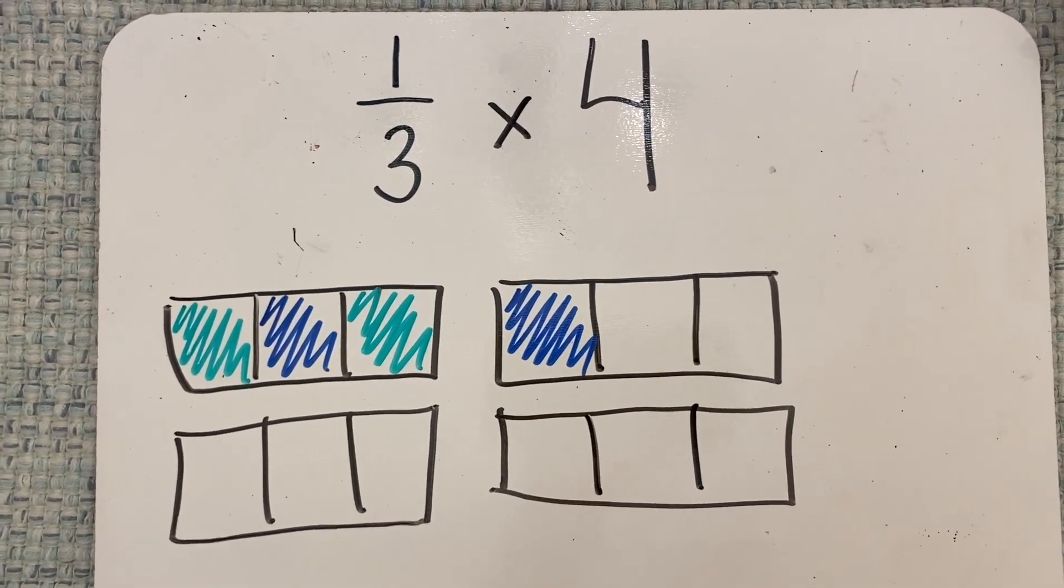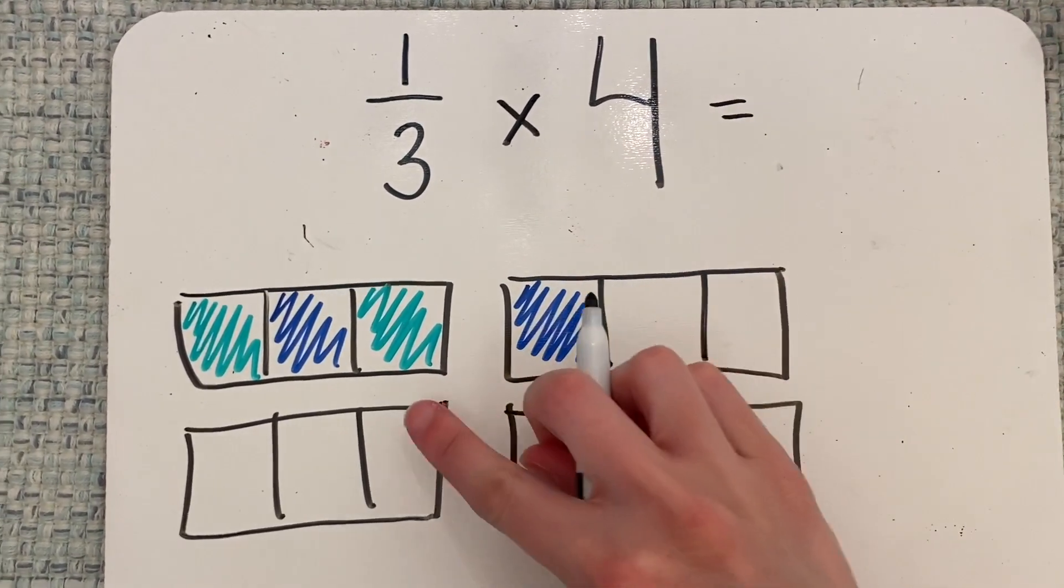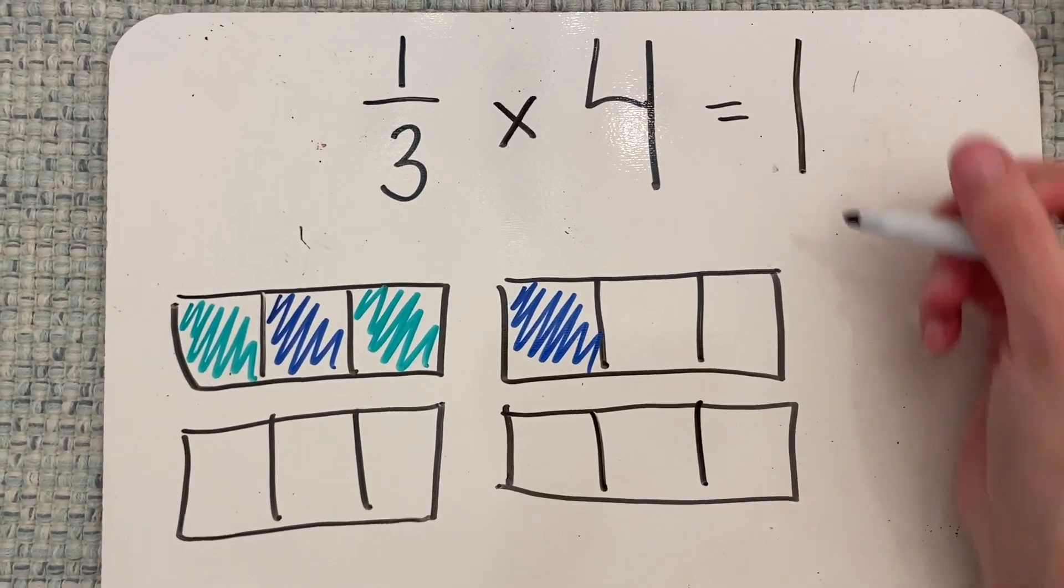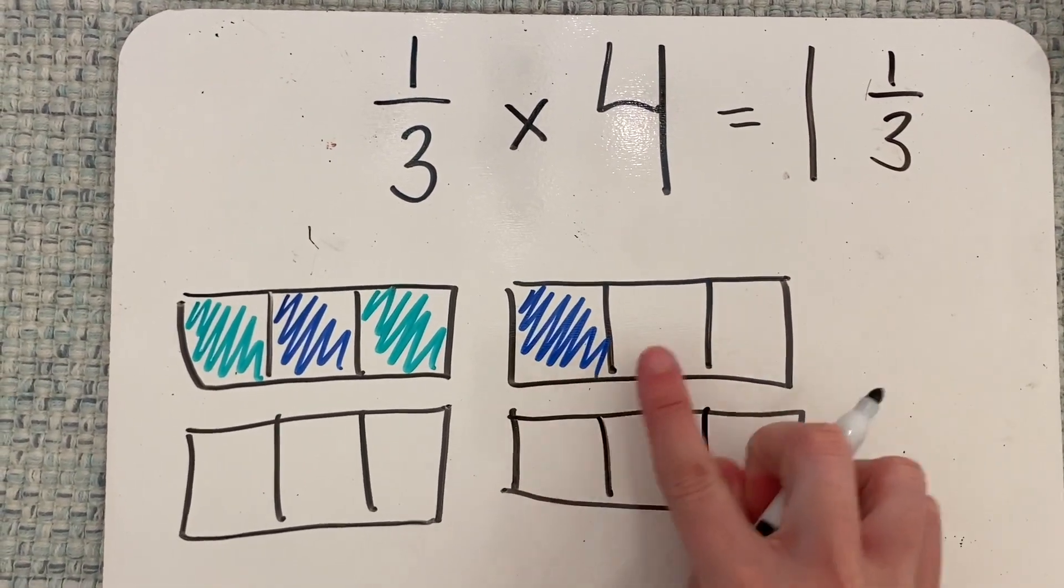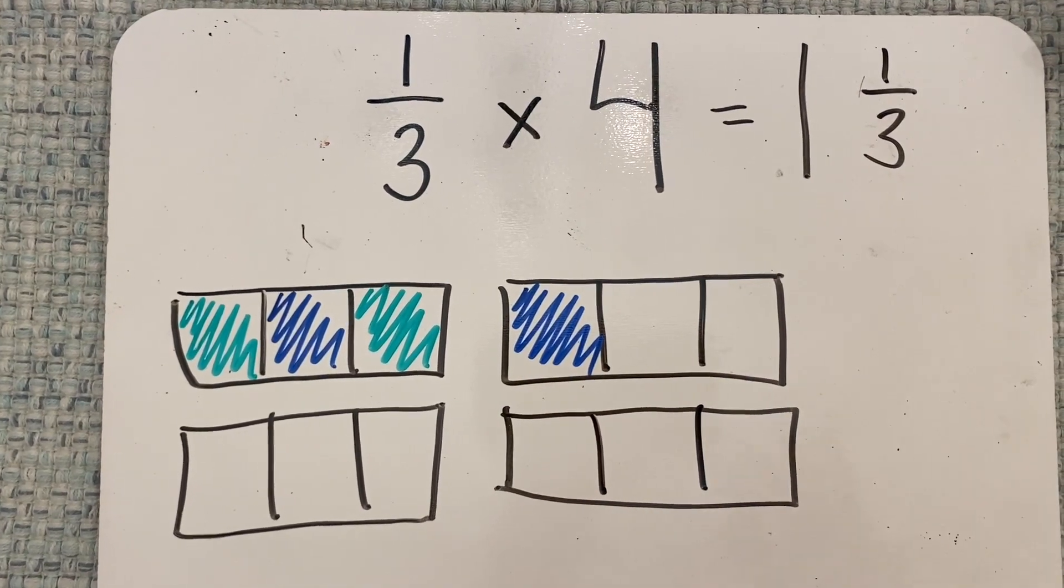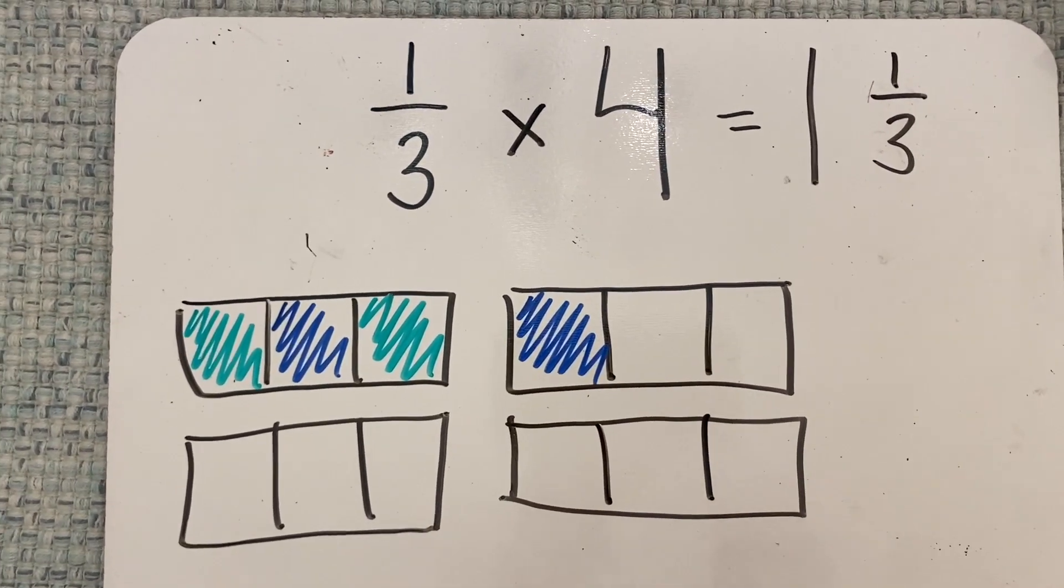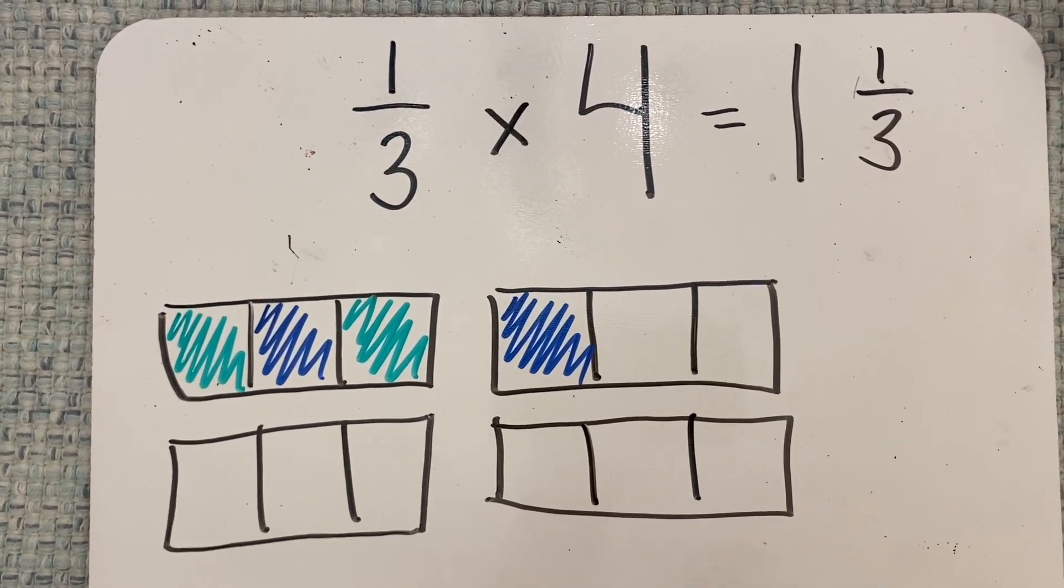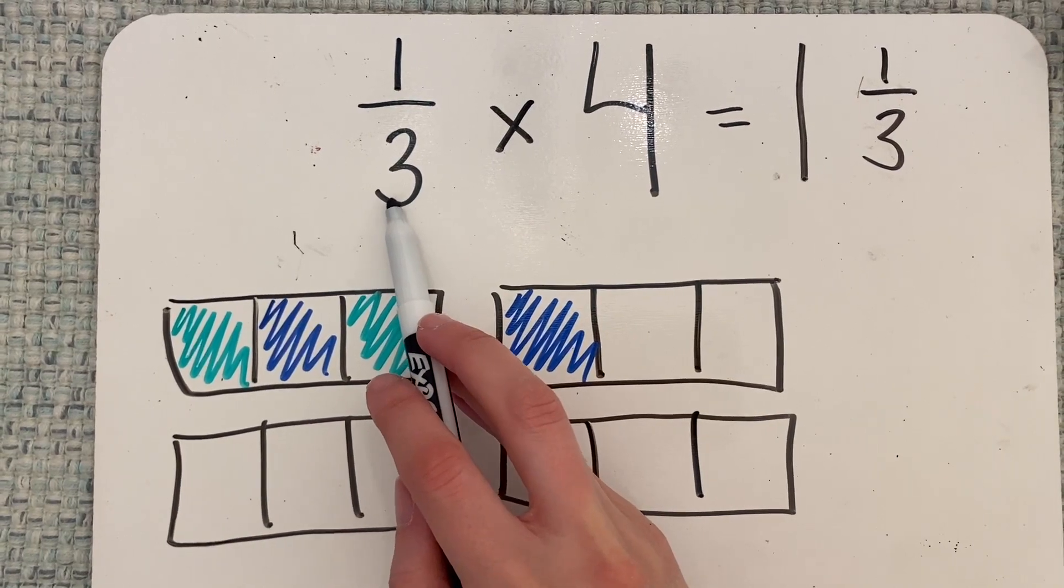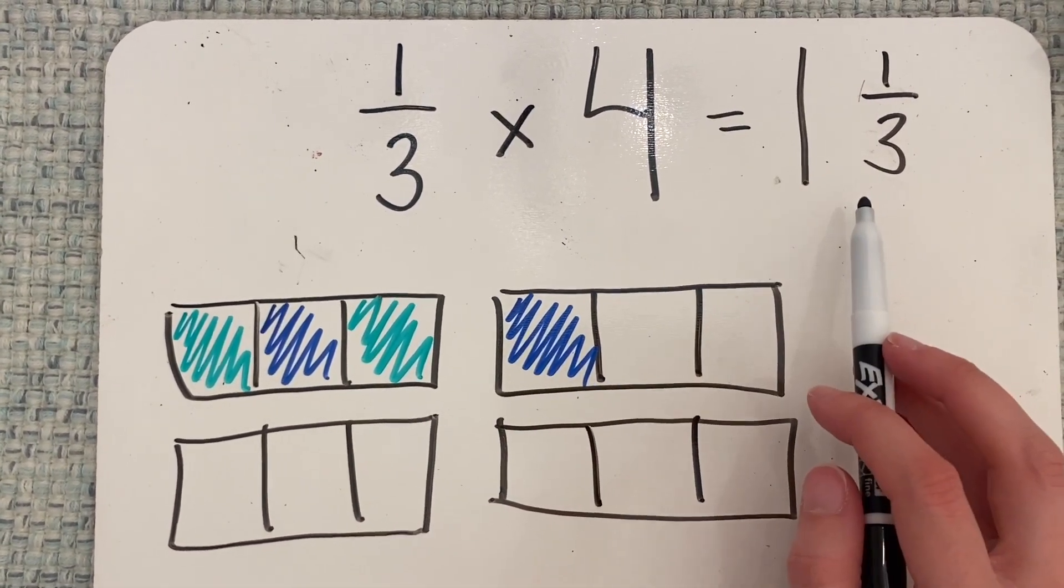And then once I have my four colored in, I can count up my total. So one-third of four wholes equals one, because I have one entire box colored in, and one-third, because I have one of the three pieces. So you can see that my four wholes get smaller, because I'm just finding a section of it. I'm finding one-third, which is a fractional piece, you know, less than a whole, of four wholes. So my answer should get smaller.